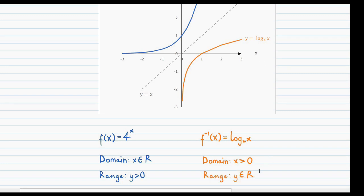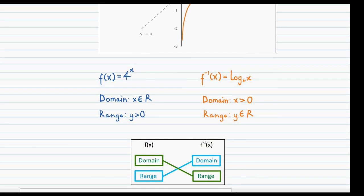Notice the similarities between the domains and ranges of both functions. The domain of the function — all real values — is the same as the range of the inverse. And the range of the function — values greater than zero — equals the domain of the inverse, also values greater than zero. This is the rule discussed at the end of the quadratic section, and it holds true for quadratic functions, exponential functions, and linear functions as well.